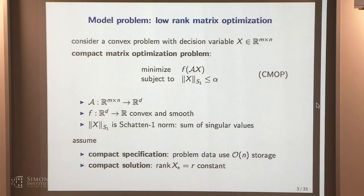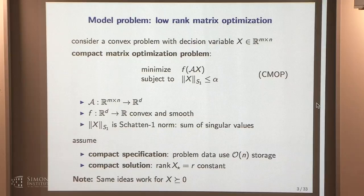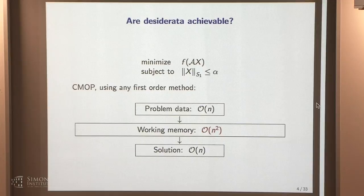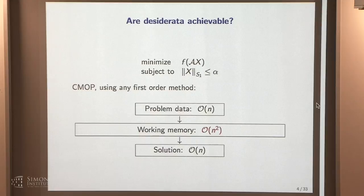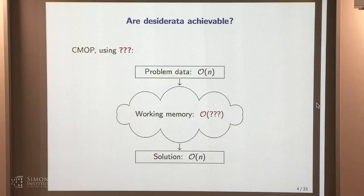I want to justify that this is an interesting class of problems. The same ideas work for the positive semidefinite case. Using a first-order method naively, we'd write down the problem variable — but as soon as we write down the variable, we've got an order n-squared thing, which immediately violates what we're trying to achieve. Our goal is to figure out how small we can make the memory while still achieving global convergence to the global optimum.